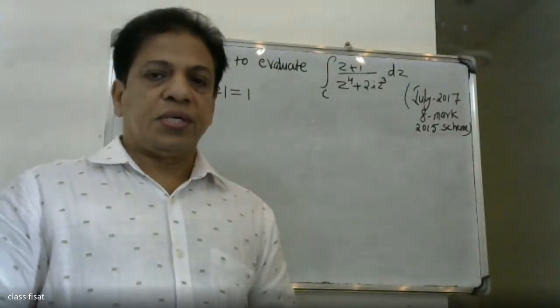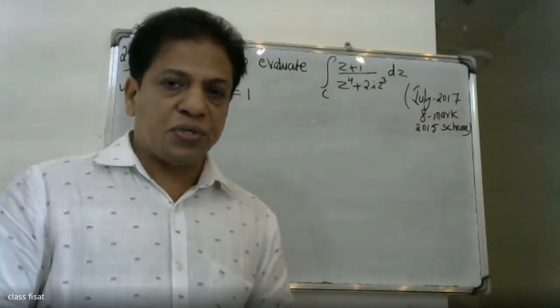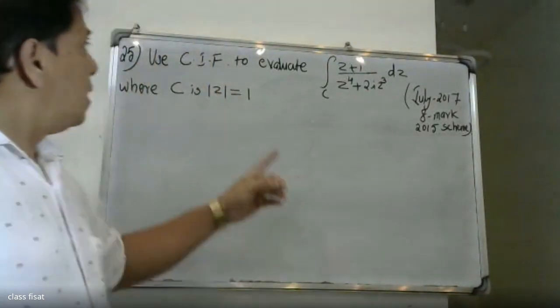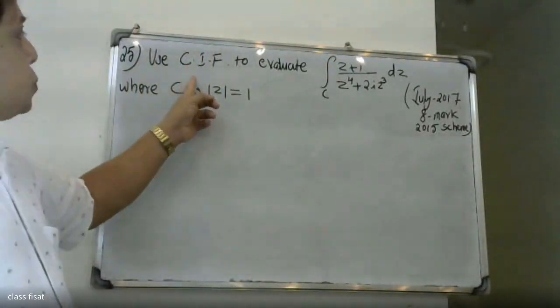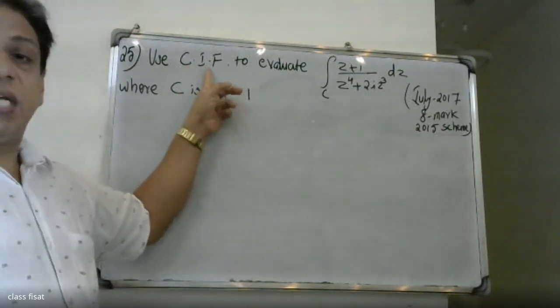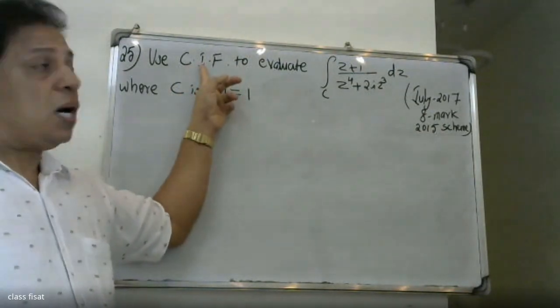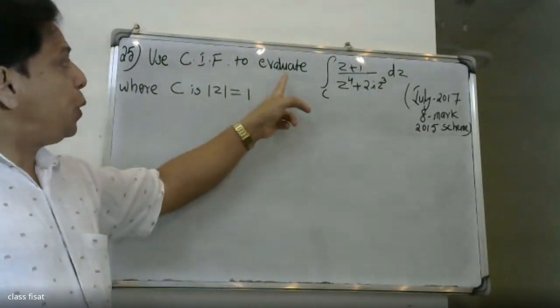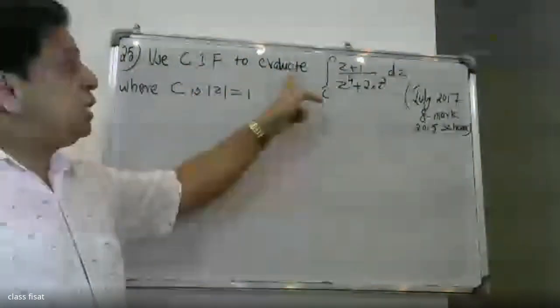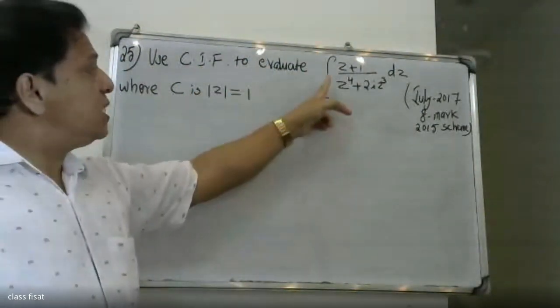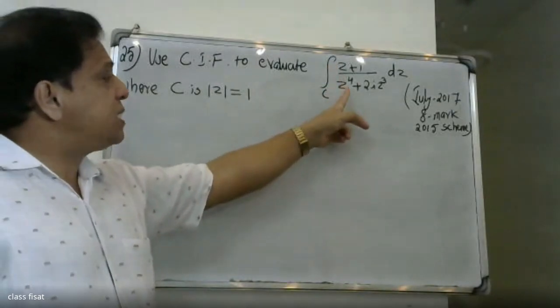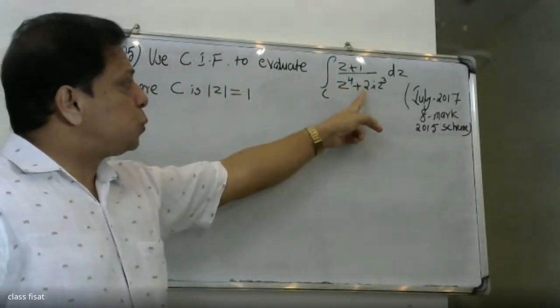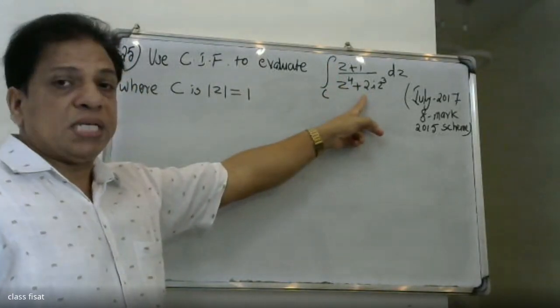Good morning, students. This is a university exam question. Use Cauchy's Integral Formula to evaluate the integral over C of (z+1) divided by (z⁴ + 2i·z) dz.